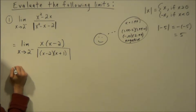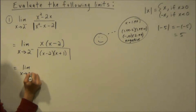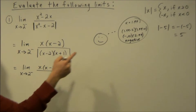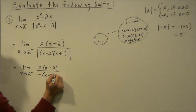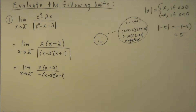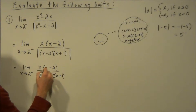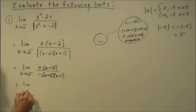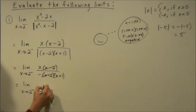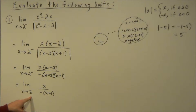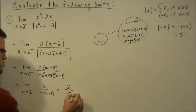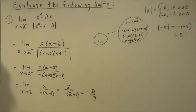For example, the absolute value of negative 5 changes sign to give positive 5. Using that concept here, as we approach 2 from the left, this absolute value term is negative, so we change the sign to remove the absolute value bars. We'll have x times (x minus 2) over negative (x minus 2)(x plus 1). We can then cancel the common factor of (x minus 2), leaving the limit as x approaches 2 from the left of x over negative (x plus 1). Substituting x = 2 gives 2 over negative (2 plus 1).